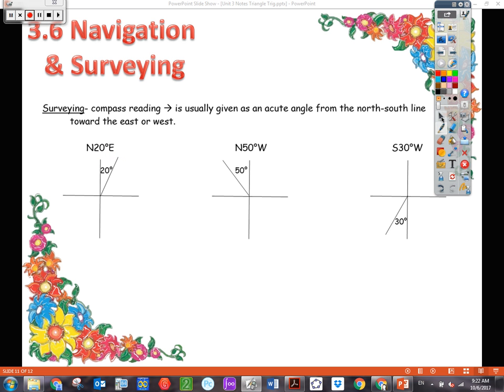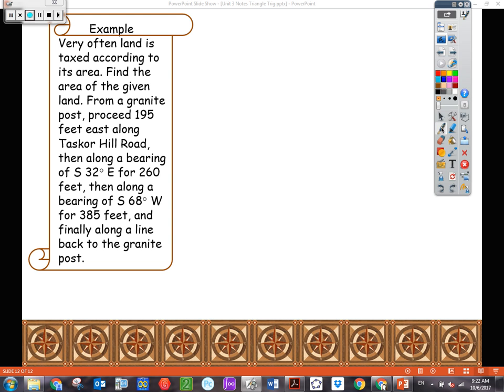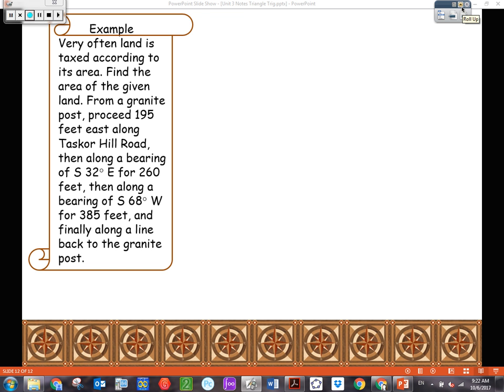Alright, so let's move to our example. Very often land is taxed according to its area. Find the area of the given land. Now we're going to have to draw a picture just like we had to on the previous lesson. So we're here's our granite mark post. We're going to proceed 195 feet this way. So 195 east.